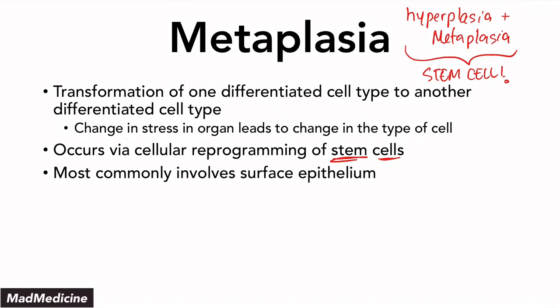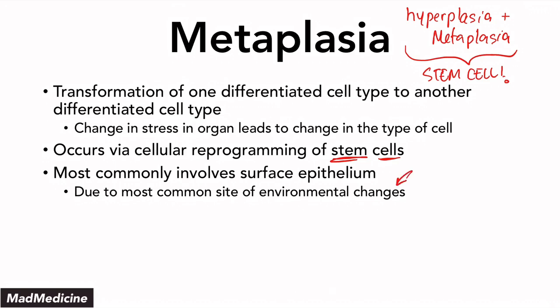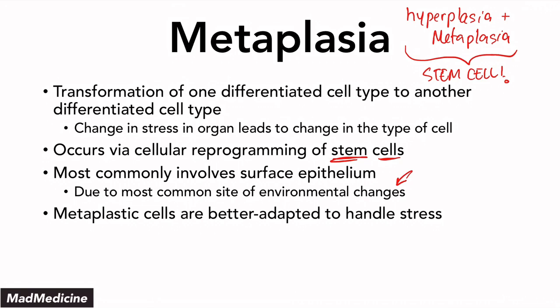Most commonly, metaplasia occurs in surface epithelium, because the surface epithelium is the most common site of environmental changes. Think about your skin — that surface epithelium is constantly under attack from touching things, washing hands, abrasive chemicals, and UV light. So the surface epithelium is the most common site where metaplasia occurs, because metaplastic cells are better adapted to handle the stress placed upon an organ.